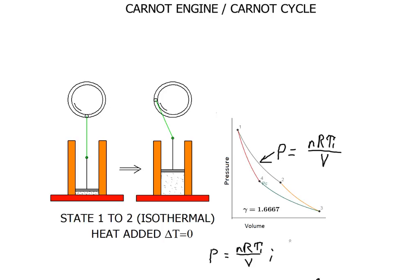Therefore, work will be equal to the negative integral from V1 to V2 of nR T1 over V. And that will be equal to minus nR T1 times the log of V2 over V1.